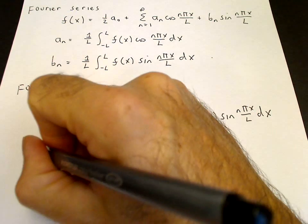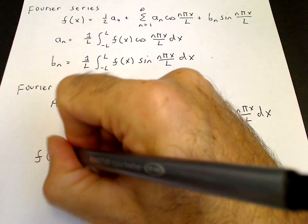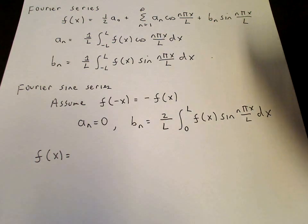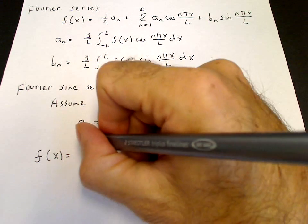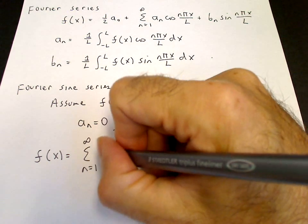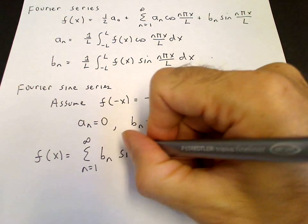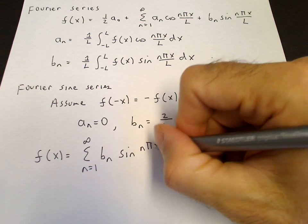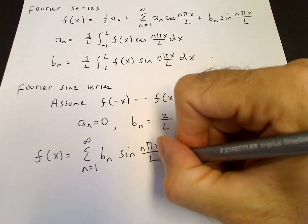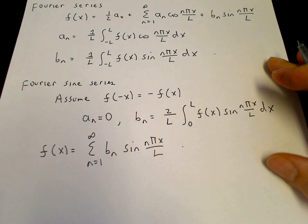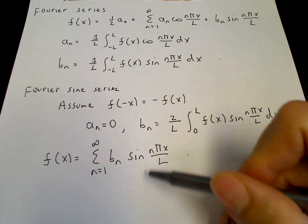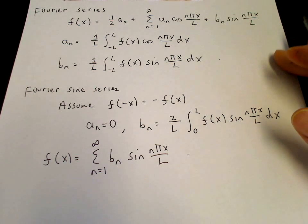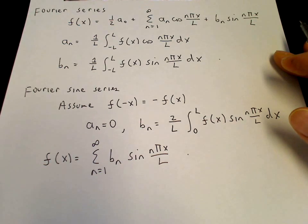And then we get the Fourier sine series. Since the a's are zeros, we end up with a sum from n equals 1 to infinity of b_n sine(nπx/l). So if f(x) is an odd function, then it can be expressed simply in terms of sines.